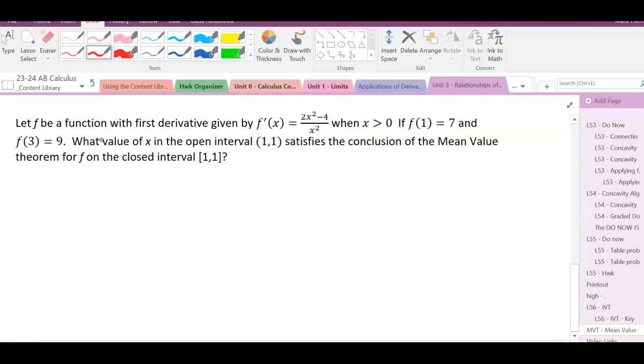Let's read this question. Let f be a function with its first derivative given by f'(x) = (2x²-4)/x² where x is greater than zero. We're given point (1,7) and (3,9). What value or values of x in the open interval (1,3) satisfies the conclusion of the Mean Value Theorem for f on the closed interval [1,3]?